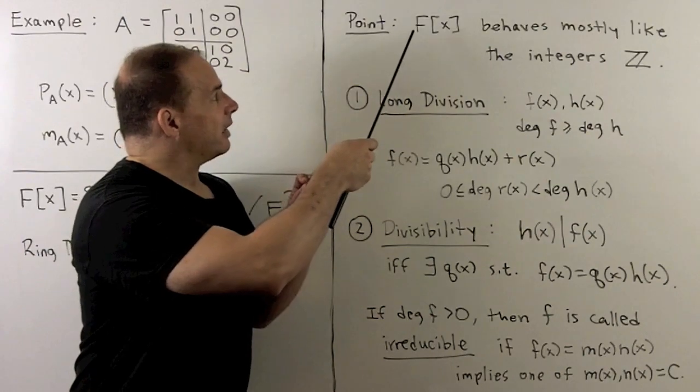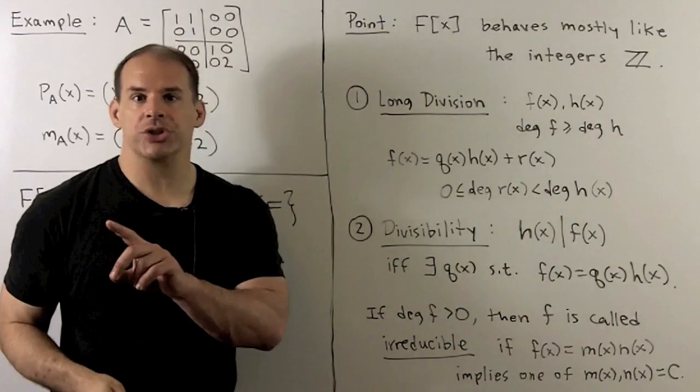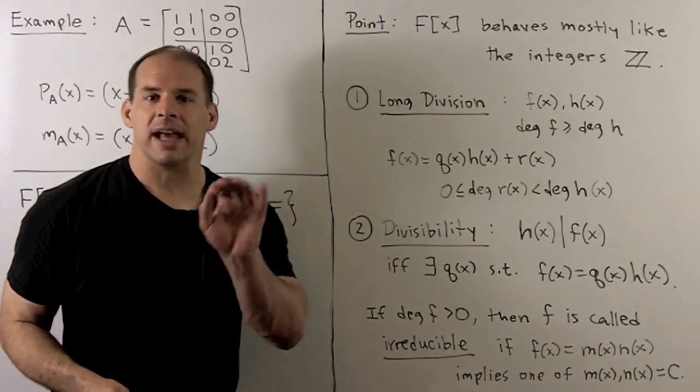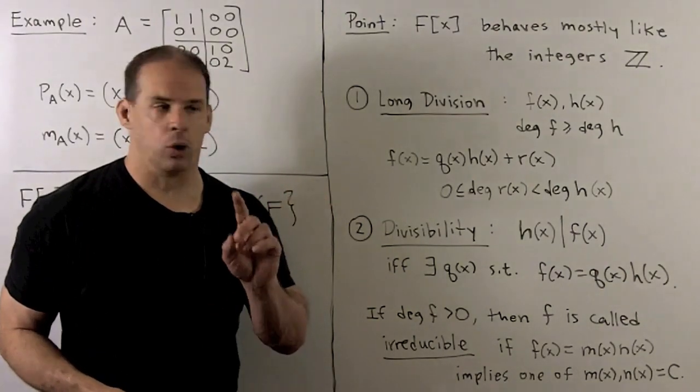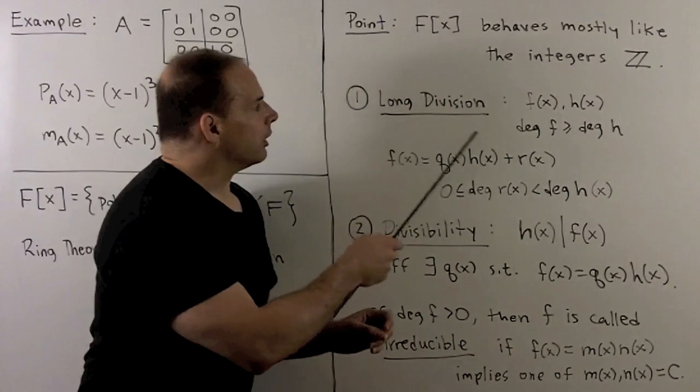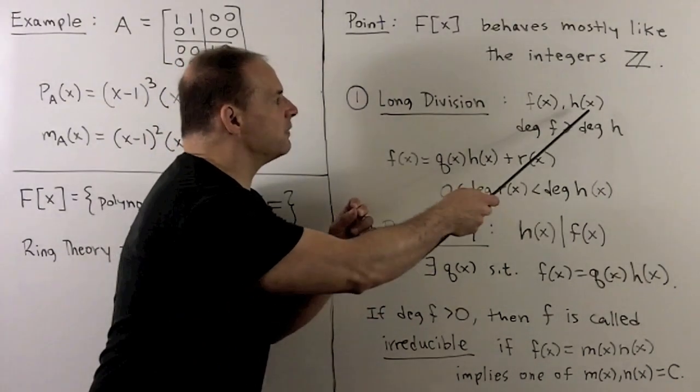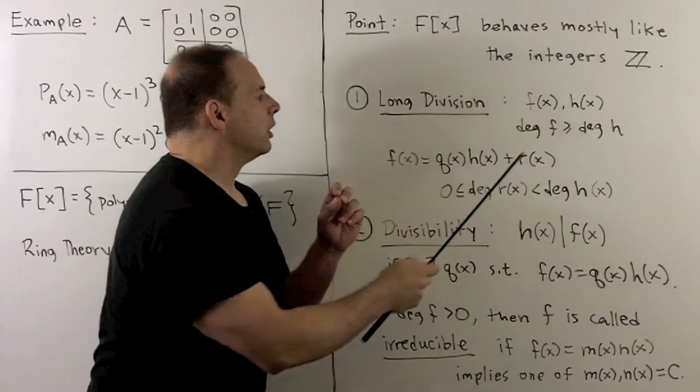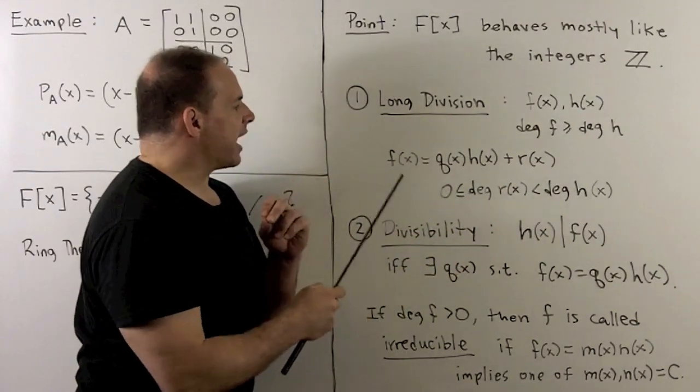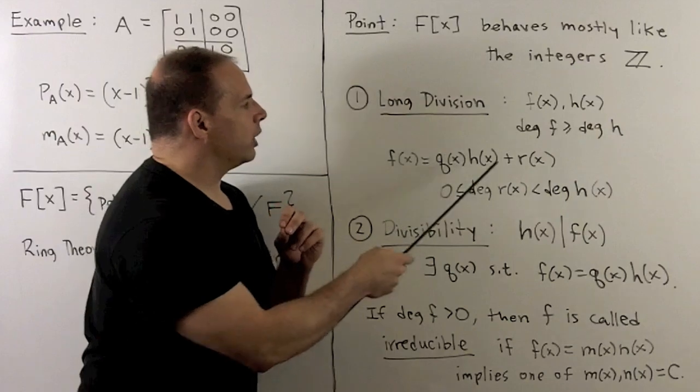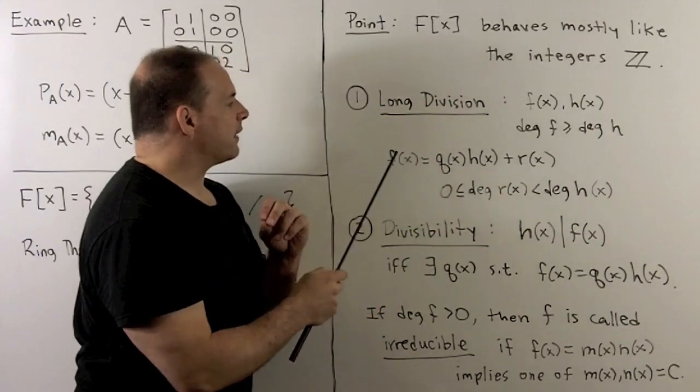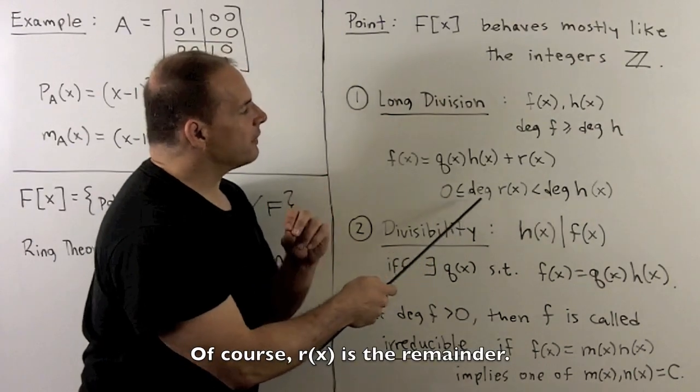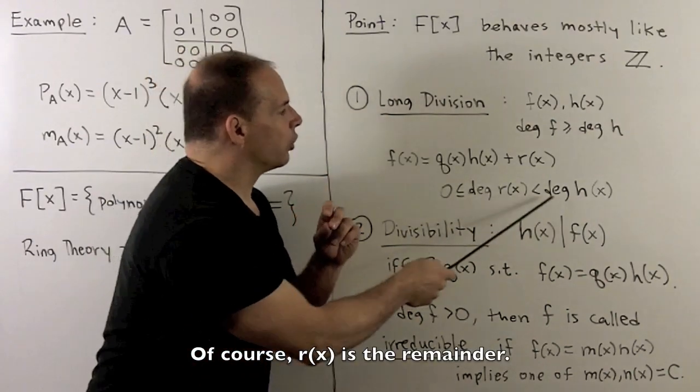Since we're not assuming ring theory, we'll just state this in plain English using analogies with the integers. Now, noting that F[X] behaves like the integers, we begin with something that everyone believes, that's that we can do long division with polynomials. So if I have polynomials f(x) and h(x), with the degree of f greater than the degree of h, we can do long division. That's just going to say I could find polynomials Q and R, such that we have f equal to Q times h plus R of x, with the degree of R between 0 and the degree of h.